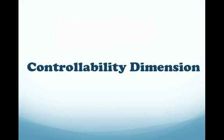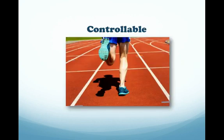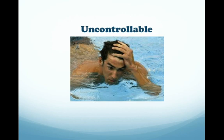The controllability dimension refers to whether the cause of the event is perceived as being under the control of the individual. For example, if a runner believes a race was lost because there was not enough practice before the event, the cause is controllable because the runner could have practiced more. However, if the runner feels the race was lost because of lack of ability, then the cause is uncontrollable. By definition, only internal attributions can be considered controllable.